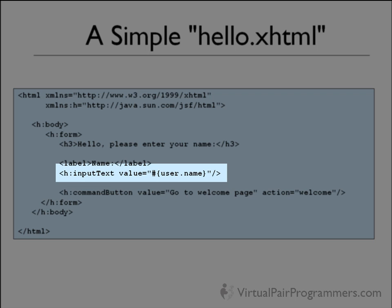The input text component is a simple but quite powerful component in JSF. It will display an input field, and when I submit the form, it will automatically take whatever's in that field and push it into a Java class. The value 'user.name' - thinking a little ahead - is going to find an object of type user and place the data into a property called name. We need to see the Java class that's going to hold the data before we really understand that field.